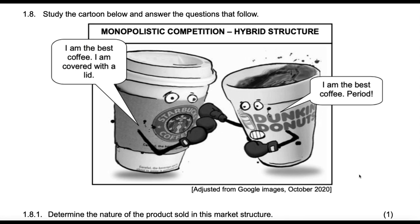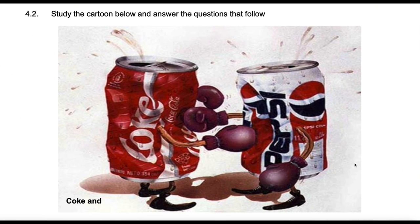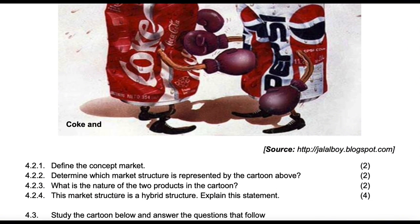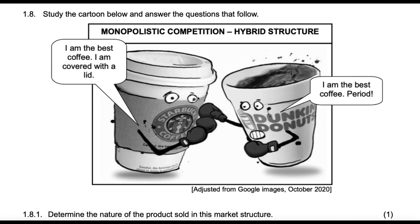This one says: study the cartoon below and answer the questions that follow. If we look here, we have Starbucks fighting with Dunkin' Donuts. This looks like one of the ones I have in my other textbook, which was Coke fighting Pepsi. More or less the same questions: identify the concept market, determine which market structure this is, what is the nature of the two products in the cartoon, and explain why this market structure is hybrid.